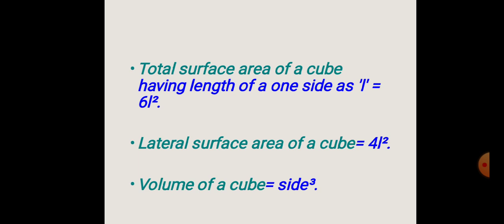The lateral surface area of a cube — also called the curved surface area — excludes the top and bottom faces. When we exclude the top and bottom, there are 4 faces remaining. So the lateral surface area of a cube is 4 × side squared, which gives us 4L squared.